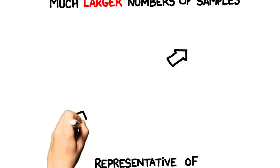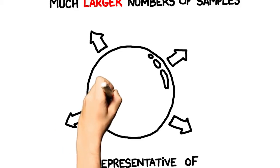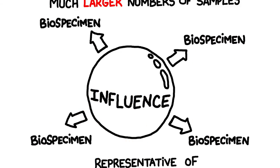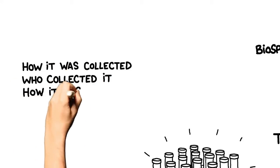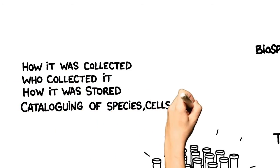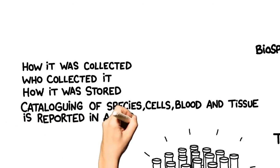As soon as you reach outside of your sphere of influence to obtain a biospecimen, you don't know how it was collected, who collected it, or how it was stored. And the cataloguing of specimens—cells, blood, tissue—is reported in a myriad of ways.